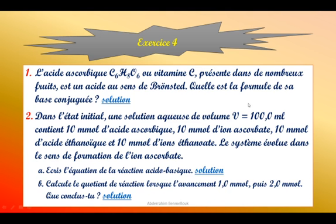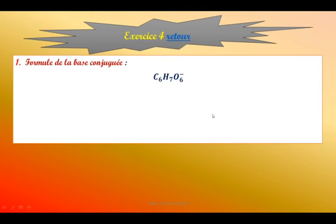L'acide ascorbique C₆H₈O₆, vitamine C, présent dans de nombreux fruits, est un acide au sens de Bronsted. Quelle est la formule de sa base conjuguée ? L'acide donne sa base conjuguée en libérant un H⁺. On ôte un H⁺, il reste 7 hydrogènes, et la charge devient négative. Donc la base conjuguée est C₆H₇O₆⁻.